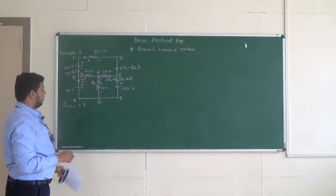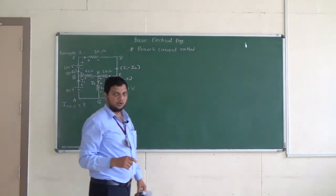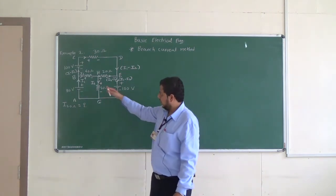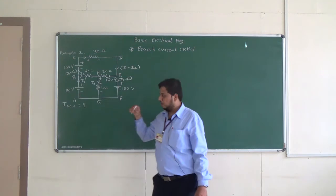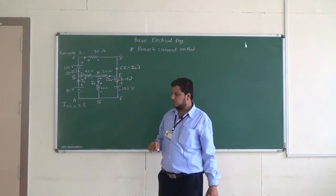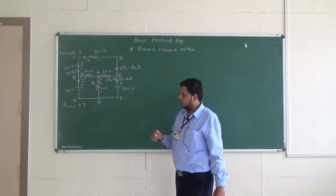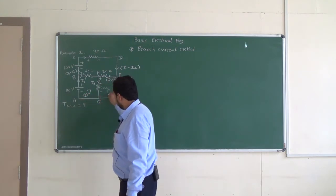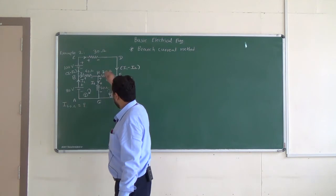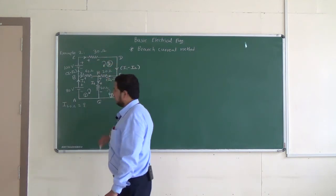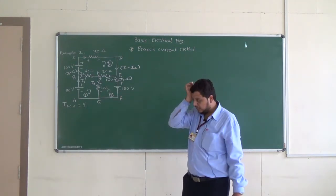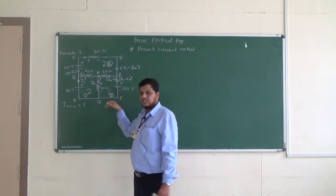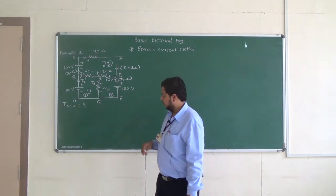In step number 5 we have to apply KVL. We apply KVL as many times as there are unknowns. In this circuit there are three unknowns: I1, I2, and I3, so we apply KVL three times. We choose three simpler loops — loop 1, loop 2, and loop 3 — considering clockwise direction, though anti-clockwise would give the same answer. In the last step, step number 6, we solve the simultaneous equations to get the unknowns.